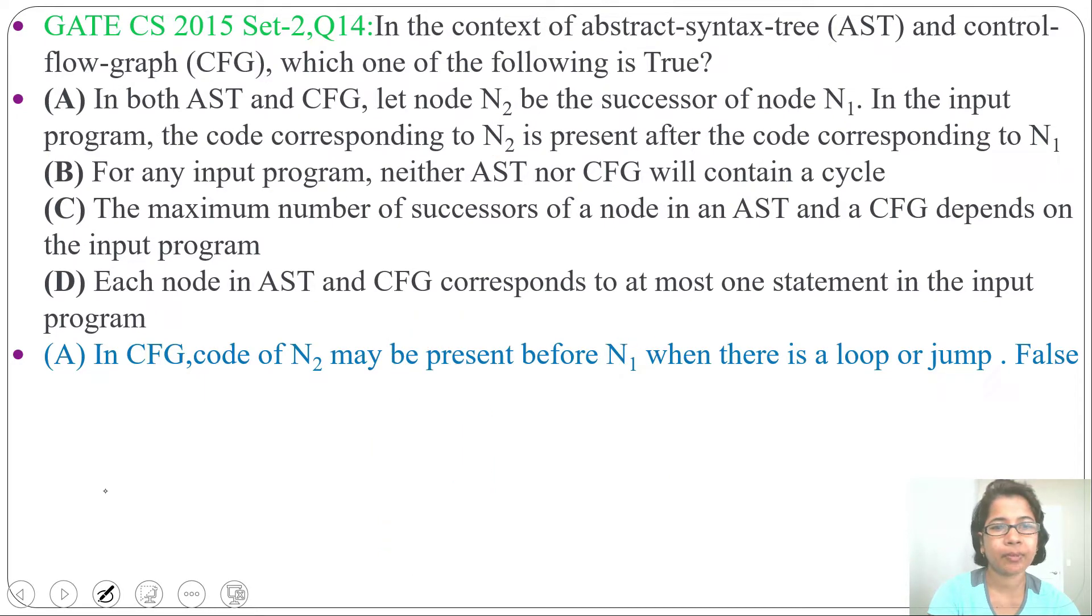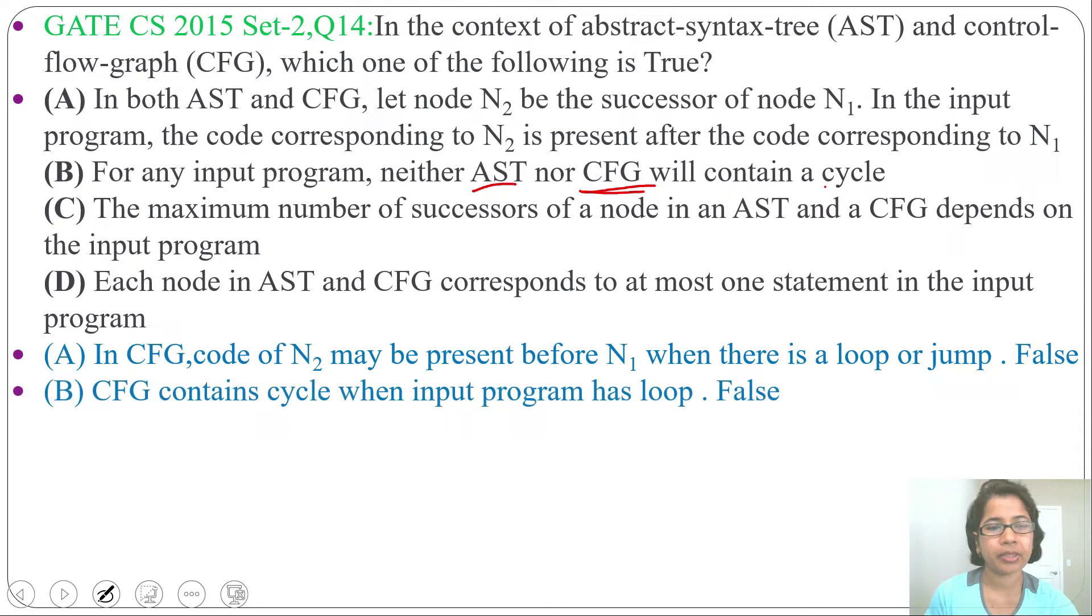Next check option B: for any input program, neither AST nor CFG will contain cycle. There can be cycle possible in CFG, so option B is wrong. There may be conditional or unconditional jump that will form a cycle, so option B is wrong.